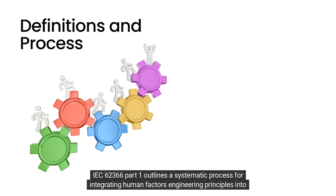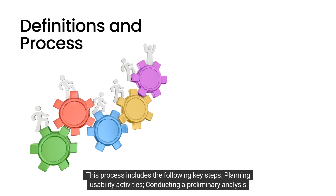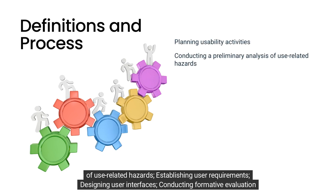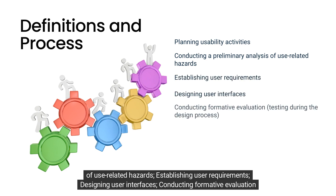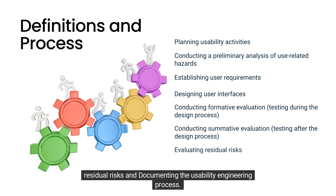IEC 62366 Part 1 outlines a systematic process for integrating human factors engineering principles into the design and development of medical devices. This process includes the following key steps: planning usability activities, conducting a preliminary analysis of use-related hazards, establishing user requirements, designing user interfaces, conducting formative evaluation and testing during the design process, conducting summative evaluation and testing after the design process, and evaluating residual risks and documenting the usability engineering process.